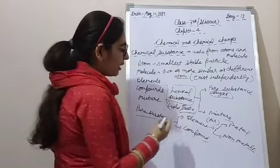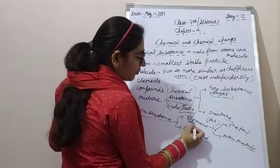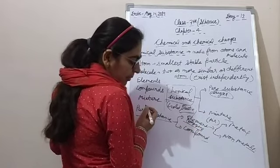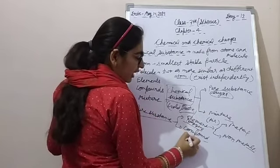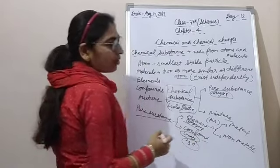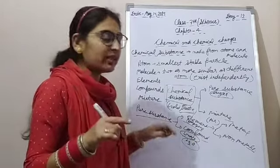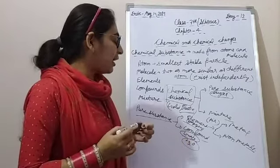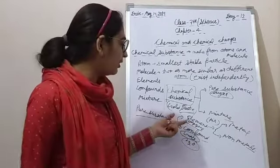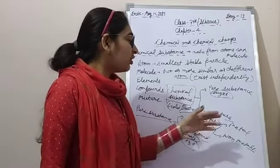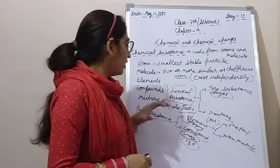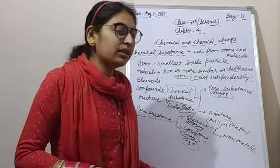Element ka example dekho — oxygen. Oxygen kya hai? Element hai. Compound ka example dekho — water, H2O. H2O ke andar hydrogen bhi hoga, oxygen bhi hoga. That is a compound. Lekin elements hain — pure, jiske andar only one kind of atom hoga. Jo two types ka hota hai: metal aur non-metal.